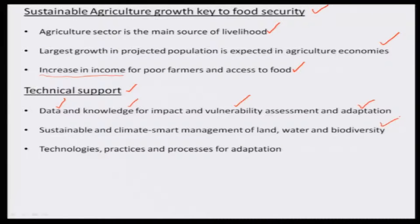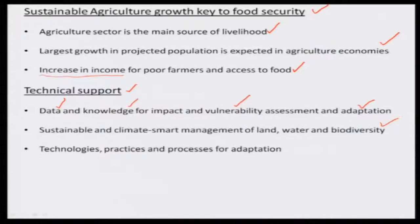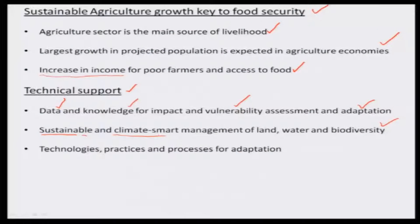Another concept is sustainable and climate-smart management — for land, water, and biodiversity. Smartness means with the existing material and existing resources, you go for cropping and get the maximum yield. This is what sustainable agriculture means, and this sustainable agriculture should take into consideration all the climate changes which are possible in the geographical area of interest. That needs to be done in terms of land, water, and biodiversity.